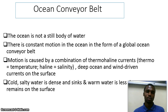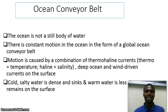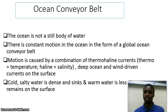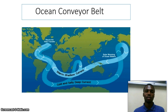We need to describe the ocean conveyor belt. The ocean is not a static body of water — it is not still, it is moving, it is circulating. There is a constant motion in the ocean, known as the conveyor belt. This motion is caused by a combination of thermohaline currents, with 'thermo' meaning temperature and 'haline' meaning salinity. Deep ocean circulation is driven by density, while surface circulation is wind-driven. Cold, salty water is dense and tends to sink, while warm water is less dense and remains on the surface. From Antarctica we have cold and salty dense water driving this circulation.